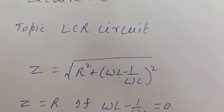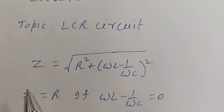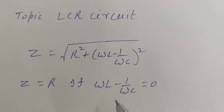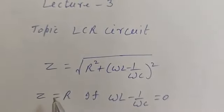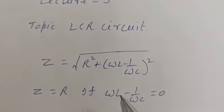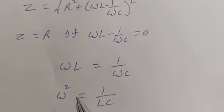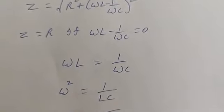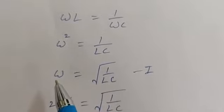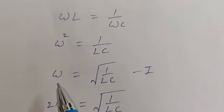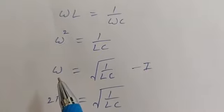In the previous topic, we calculated that Z is equal to the square root of R squared plus (ωL minus 1/ωC) whole square. That was the impedance calculated in the previous lecture. If ωL minus 1/ωC equals zero, then Z will be equal to R — impedance will be minimum. This means ωL should equal 1/ωC, so ω² equals 1/LC, and ω equals the square root of 1/LC. That is the angular frequency at which impedance is minimum.